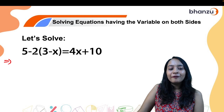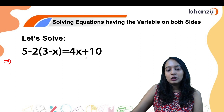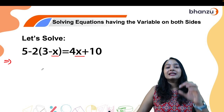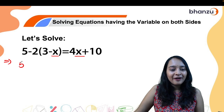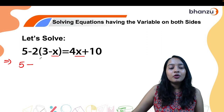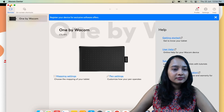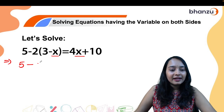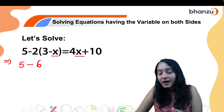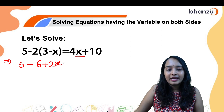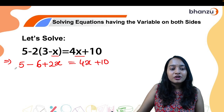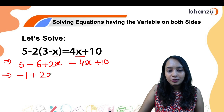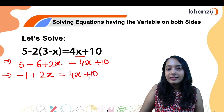Let's solve a question: 5 minus 2(3 minus x) equals 4x plus 10. You can see variables on both the left and right hand side. First, let's simplify by opening the brackets. Minus 2 multiplied with 3 gives minus 6, and minus 2 multiplied with minus x gives plus 2x. So we have 5 minus 6 plus 2x equals 4x plus 10, which simplifies to minus 1 plus 2x equals 4x plus 10.